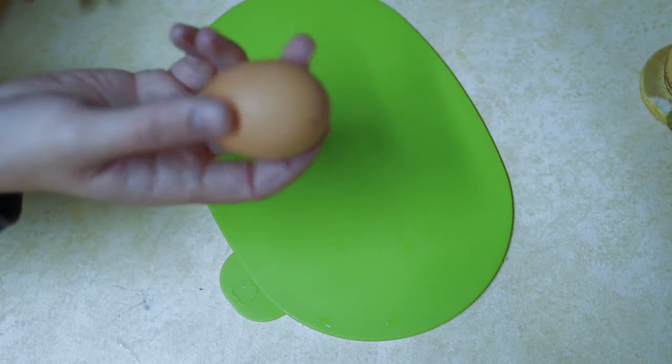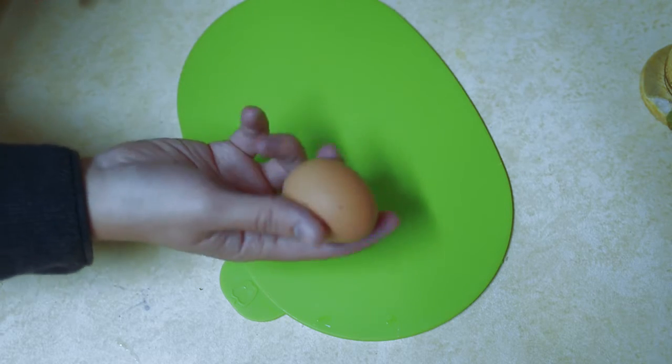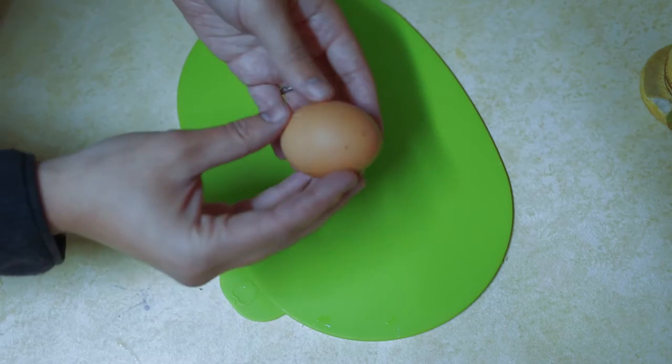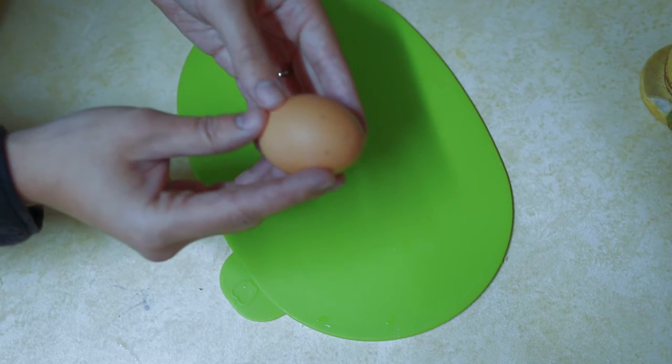The roll is essential because when you're rolling it, you're effectively trying to break up the membrane along the inside of the egg. If you separate that membrane from the egg, that's what's going to make this work.